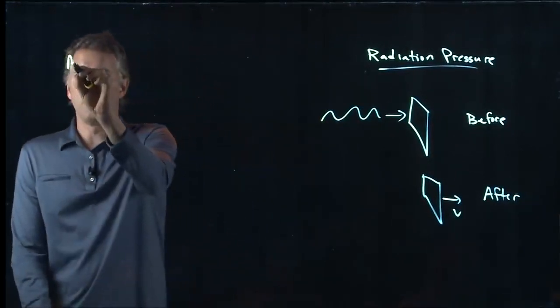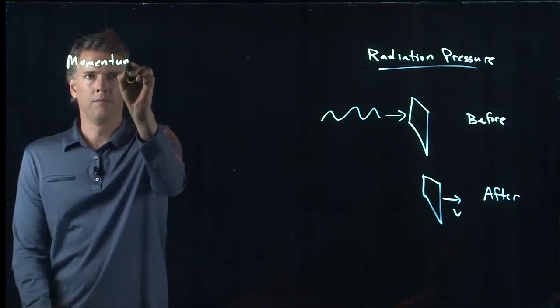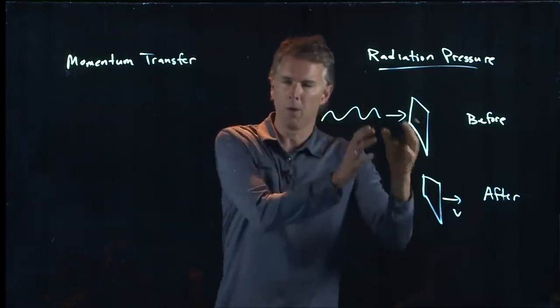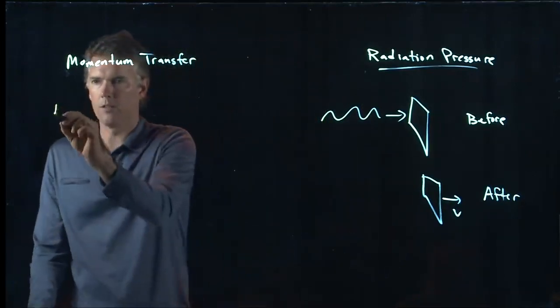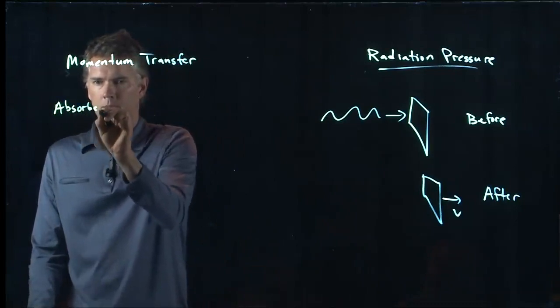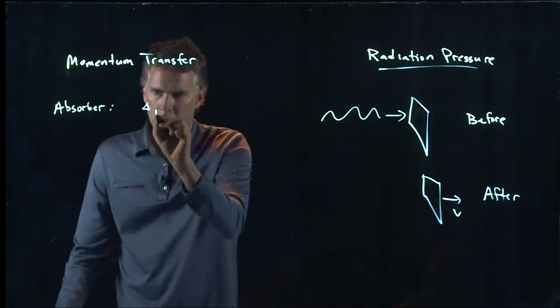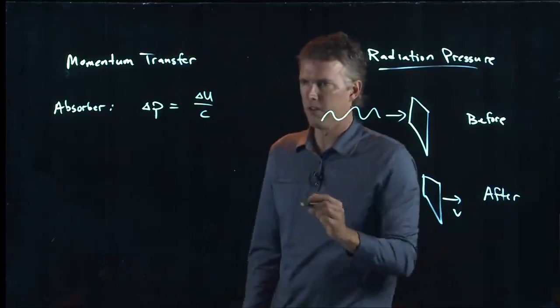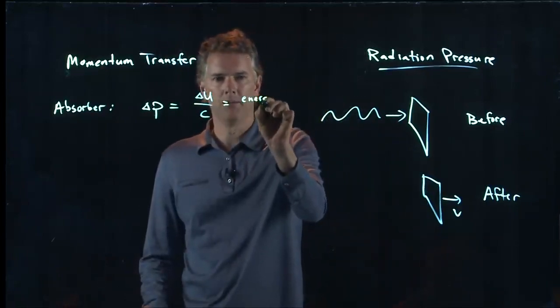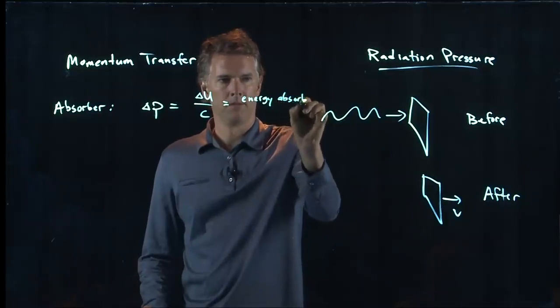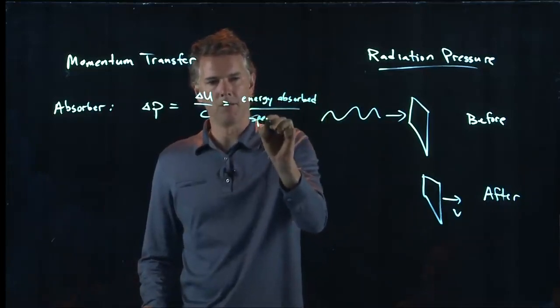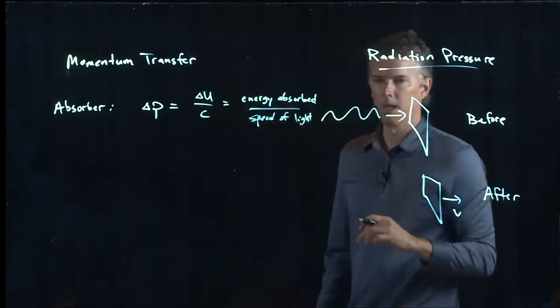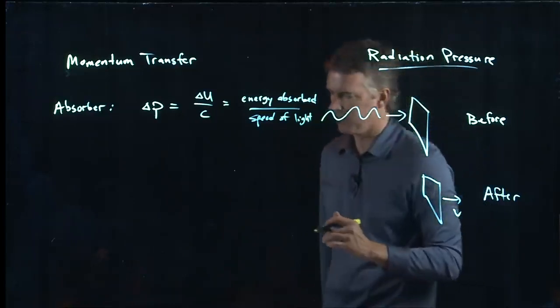For an absorber, the momentum transfer from the wave to the absorber looks like the following. Delta P is delta U over C. How much energy was absorbed divided by how fast it was going? Speed of light. And this is the delta P that is picked up by that absorber.